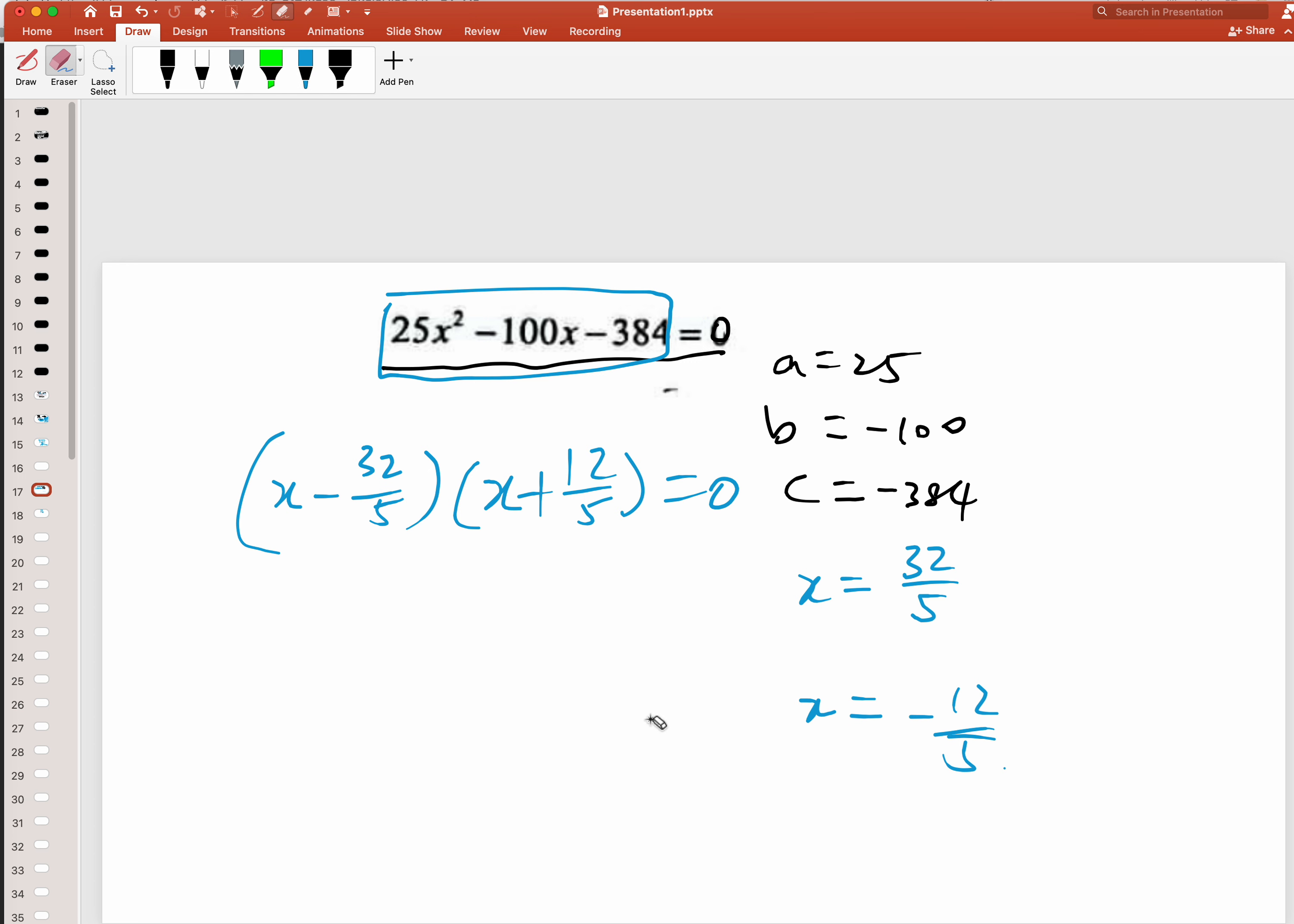Once you get these two, you make it the same denominator. Over here you have this, over here you have this. Then you combine, you get 5x minus 32, this is 5, then you get 5x plus 12.